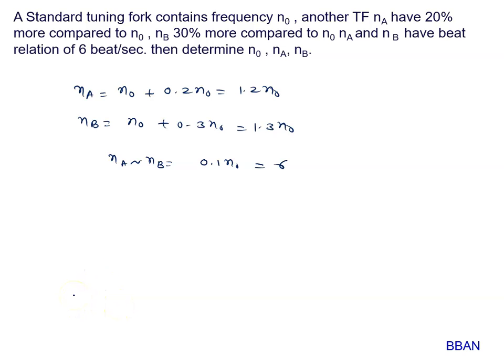Find the value of N0, NA, and NB. N0 is directly connected here. 6 divided by 0.1 is 60 Hertz. This is N0 value.